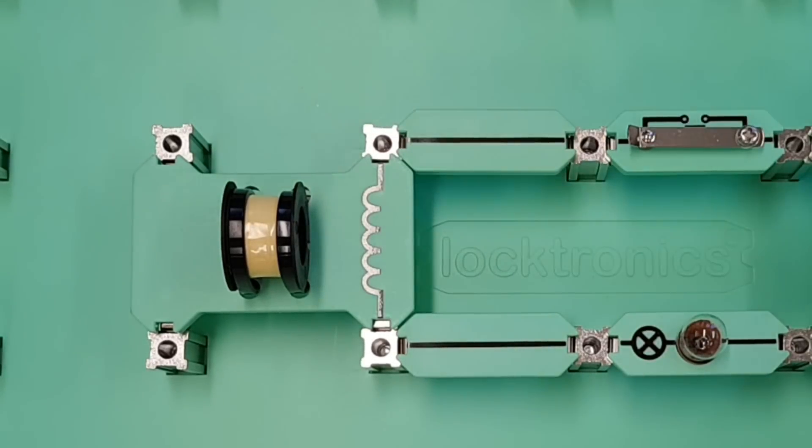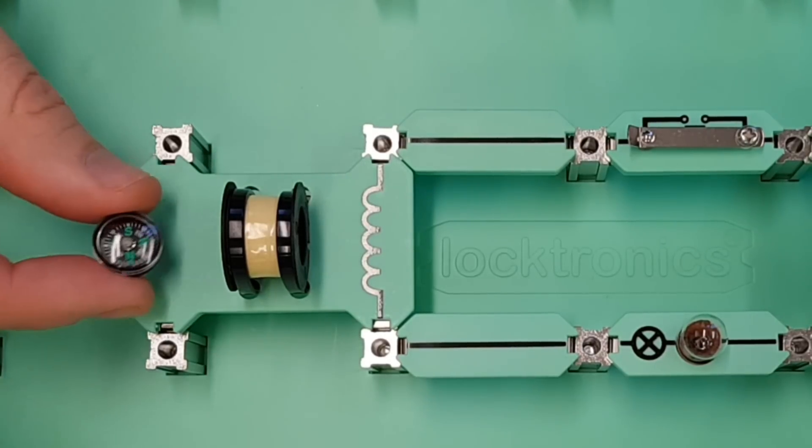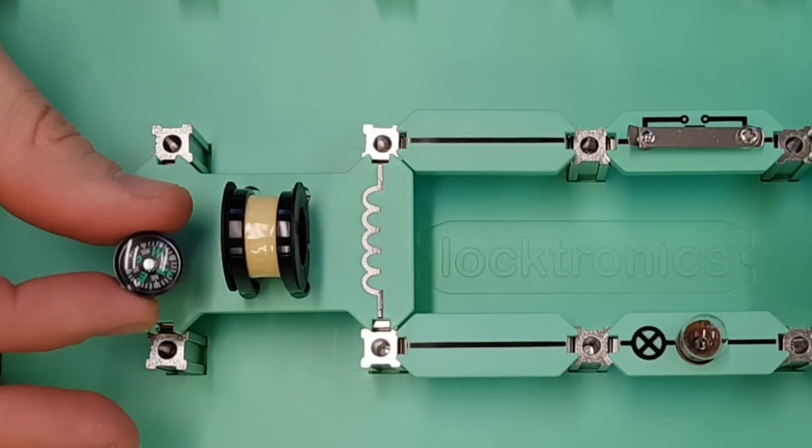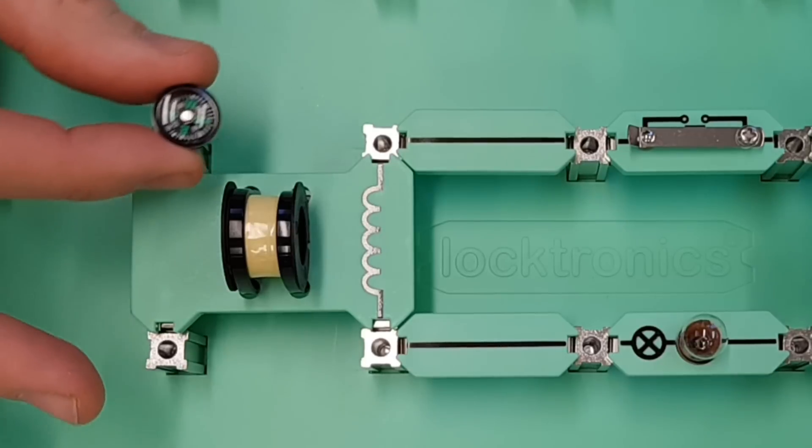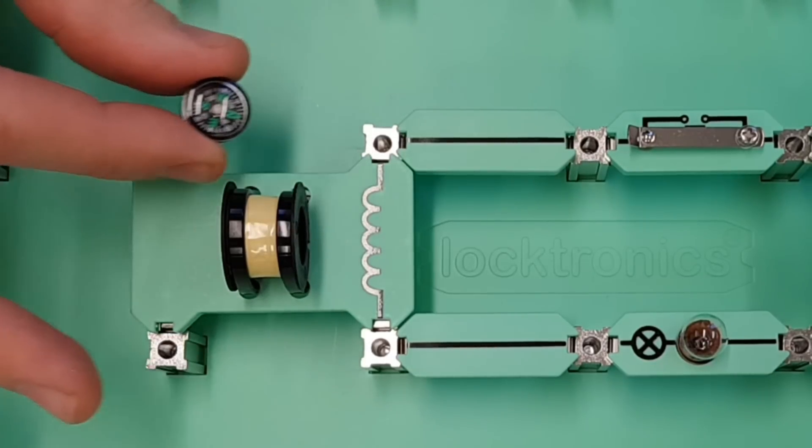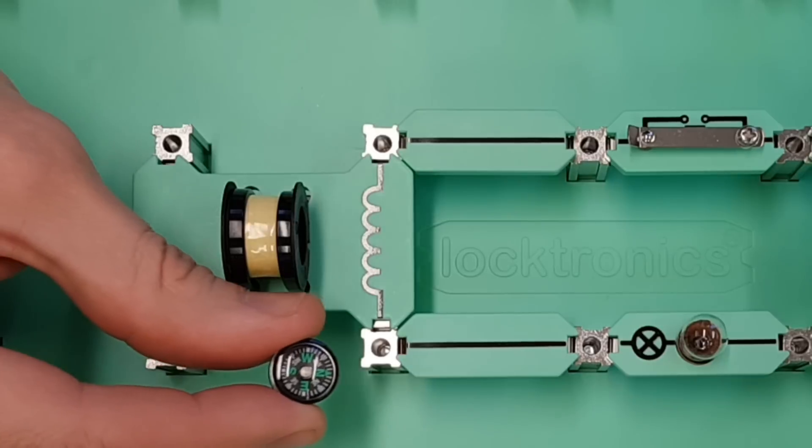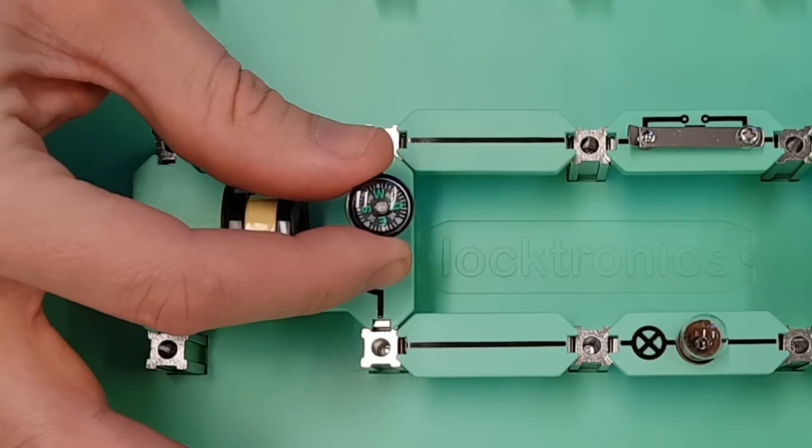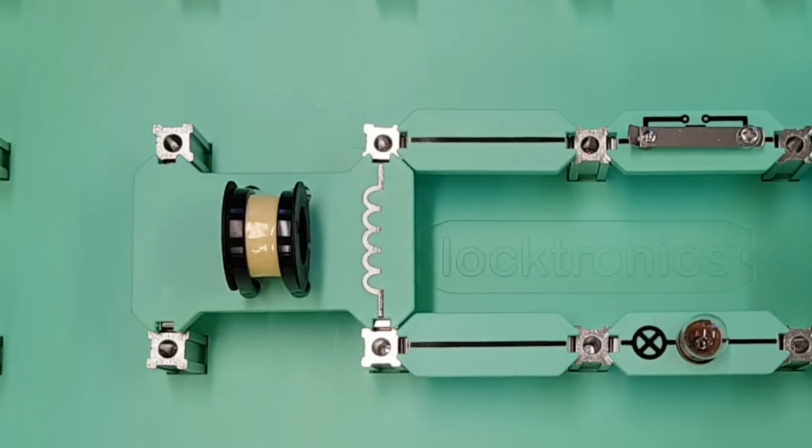Now if we take the bar magnet away and just have a look at the compass here, you can see that this is not being affected at all. This circuit is currently switched off and there is absolutely no magnetism within the circuit, so the compass is just maintaining its position pointing at north.